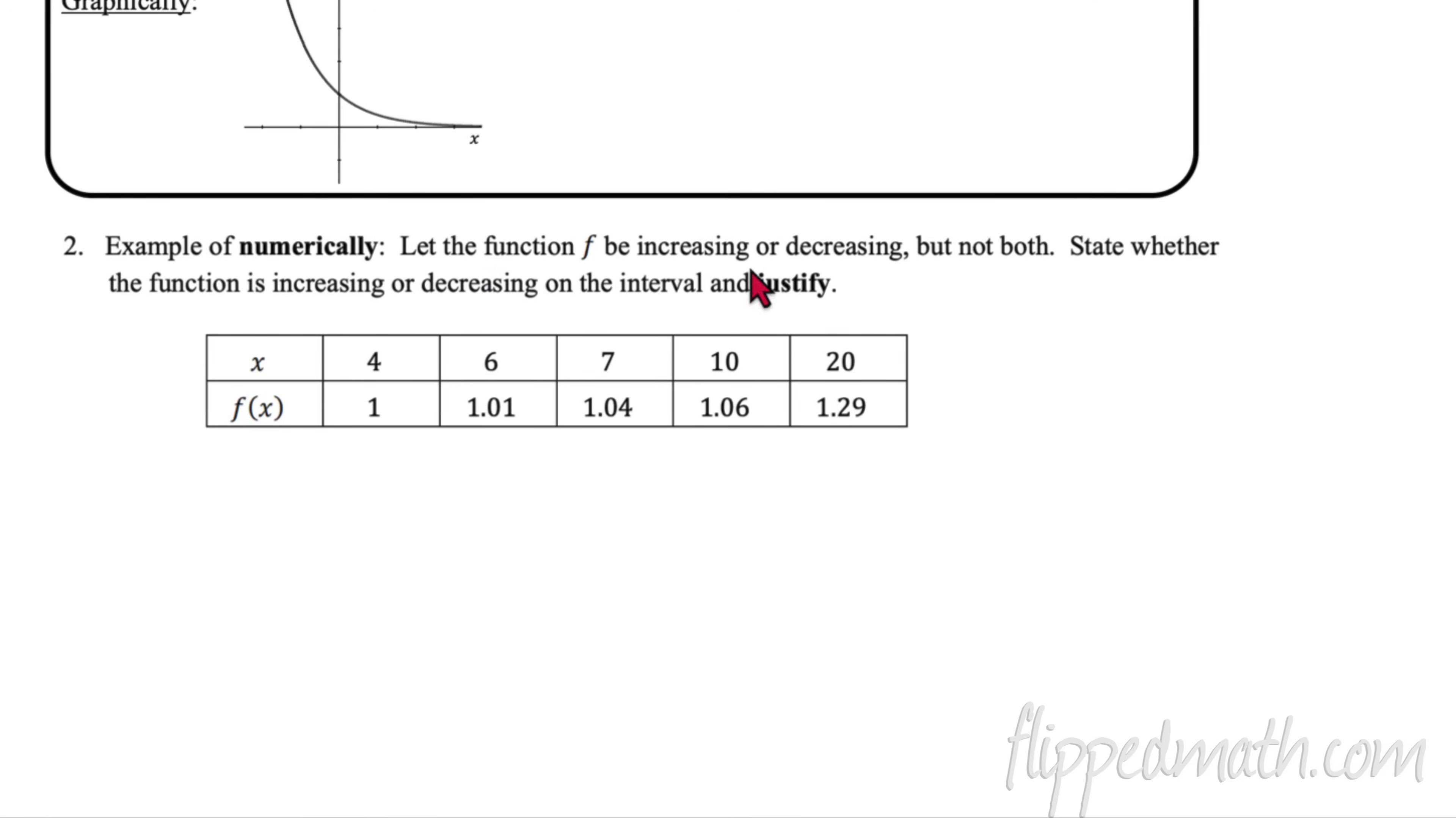But there is one part of the VANG that we're leaving out. Numerically, in this example, it says let the function f be increasing or decreasing, but not both. So we know that it doesn't have like a dip in here where it goes down and comes back up. It's either completely increasing or completely decreasing. State whether the function is increasing or decreasing. Easy part. And then justify. Also easy part, but a little more difficult. So let's look at the table we have right here. We notice that the input values are increasing. So as the input values increase, we notice that the output values also increase and they always increase for each value that we have.